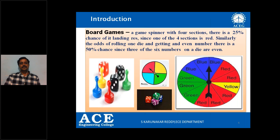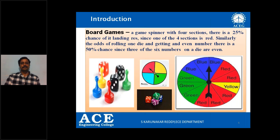When you go for board games, if you have a game spinner with four sections, there is a 25% chance of it landing on red, since one of the four sections is red. Similarly, the odds of rolling one die and getting an even number is a 50% chance, since three of the six numbers on the die are even. That means when we throw a die, we have six numbers: one, two, three, four, five, and six — three odd numbers and three even numbers. So the probability of getting an odd number or an even number will be the same: 50%.